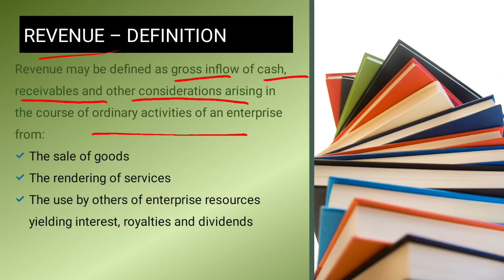The ordinary activities give rise to revenue in three forms. First is the sale of goods. Second is the rendering of services. Third is the use of enterprise resources yielding interest, royalty, and dividend. These are the three main items for revenue recognition.